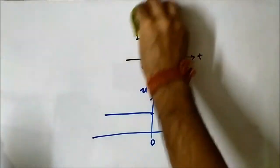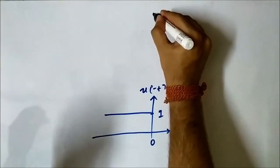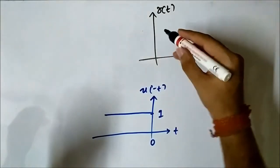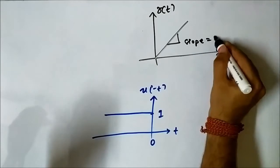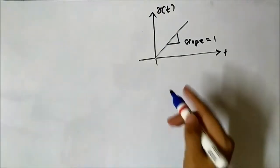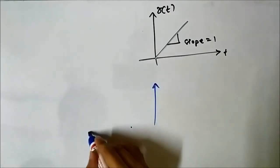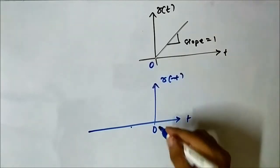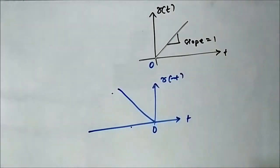We take the ramp signal — it has a slope equal to 1, like this. The time-reversed signal will be the mirror image of this about the vertical axis, or the amplitude axis — it looks like this.